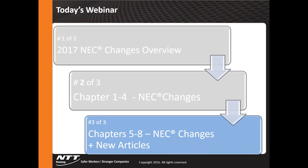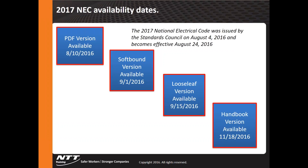We have done three actual webinars — this will be our third one. They should all be available through our NTT site, and also on Facebook. A little about availability: the PDF version is already out, you can download it now. Soon the soft-bound and loosely-bound versions of the actual books will be available. Those who use the handbook will have to wait until November. The National Electric Code Council voted on it August 4th, and it officially becomes effective August 24th.